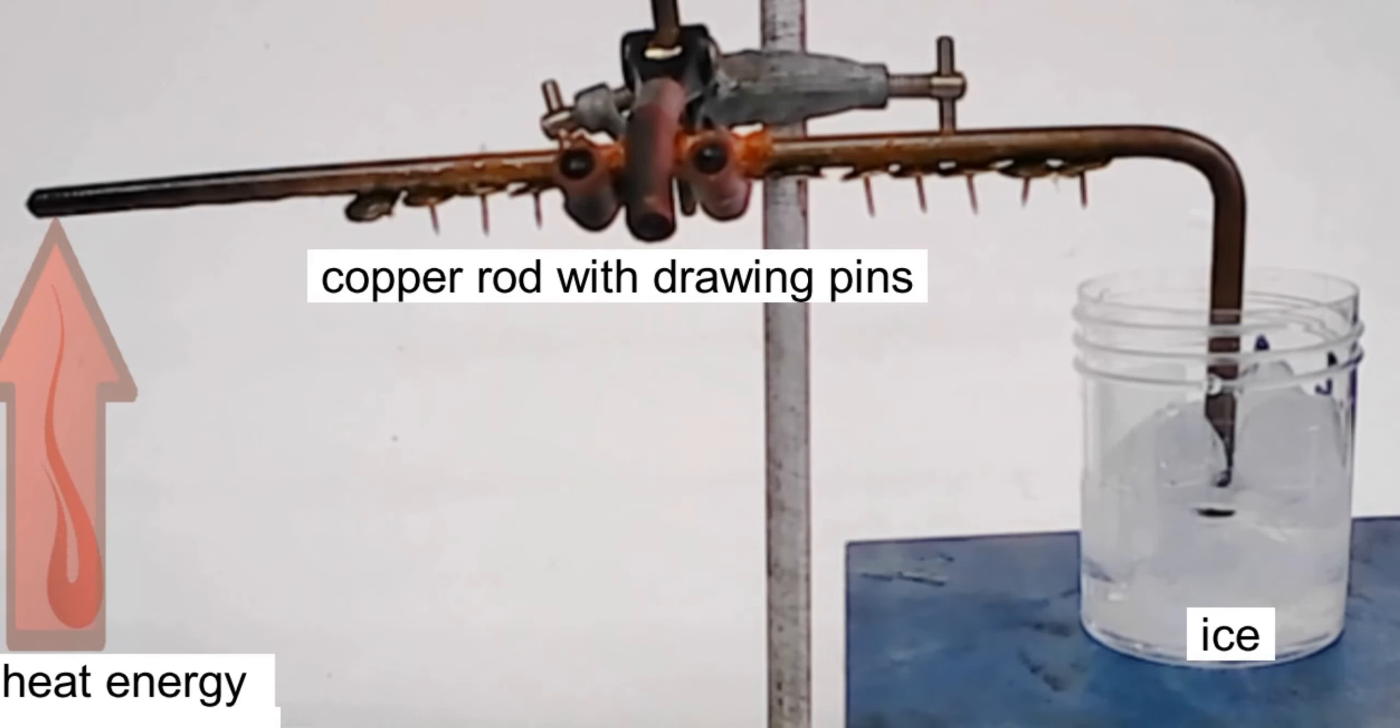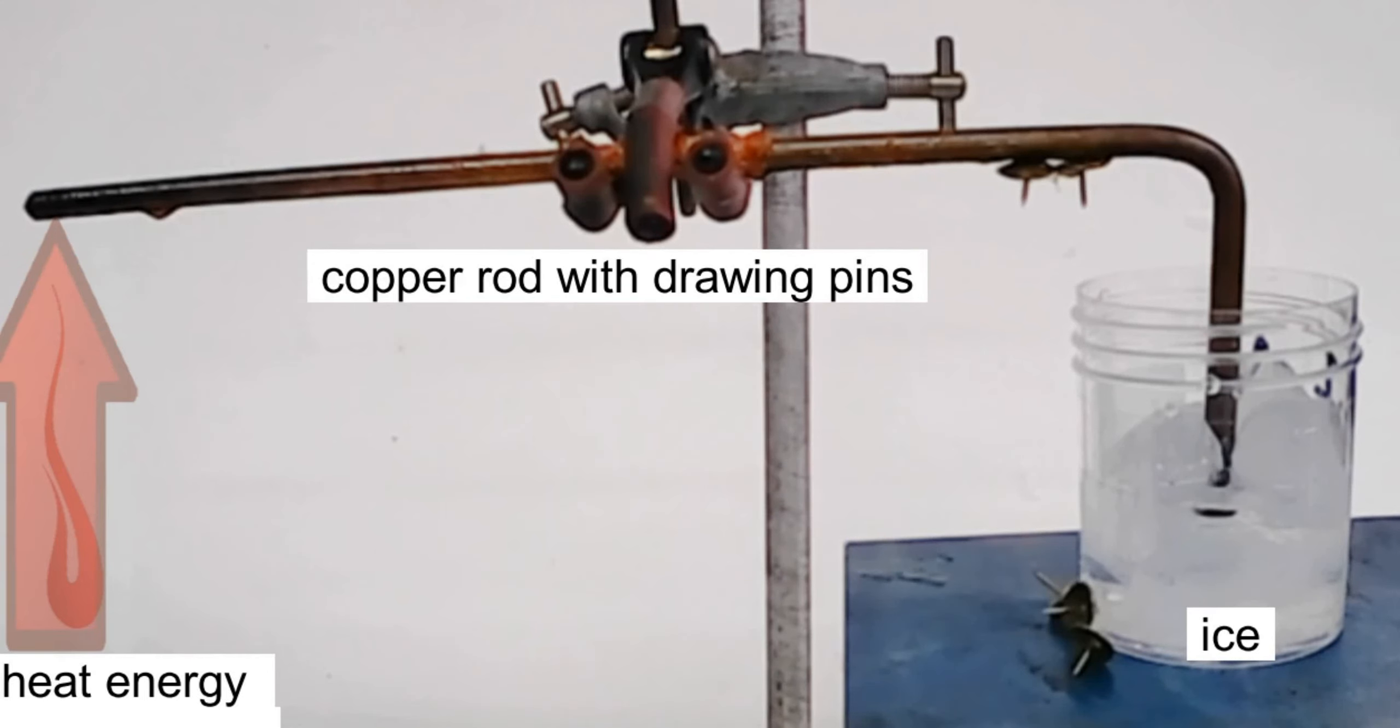They're dropping off, they keep on dropping off from the left-hand side. But even those on the right-hand side will eventually heat up, the wax melts between the rod and the pin, and they start to drop off. So heat is definitely moving through this rod, as you can quite clearly see. Even those pins on the right-hand side are starting to drop off.